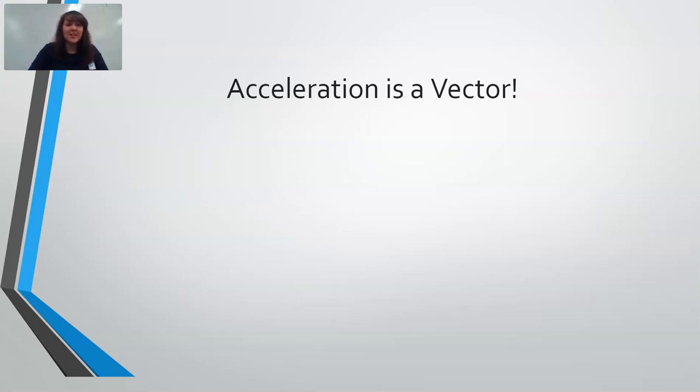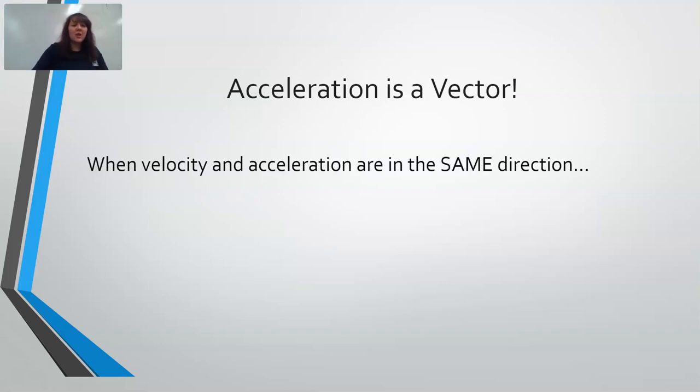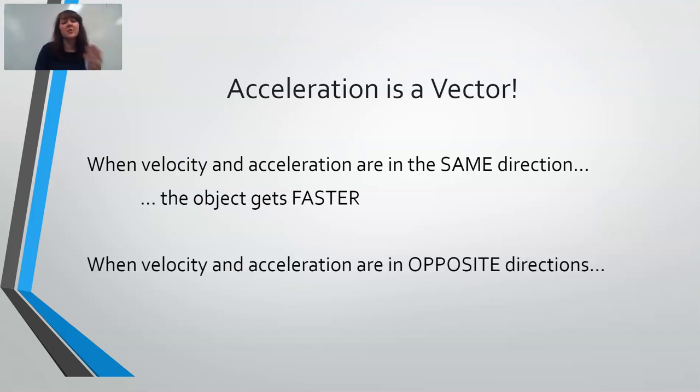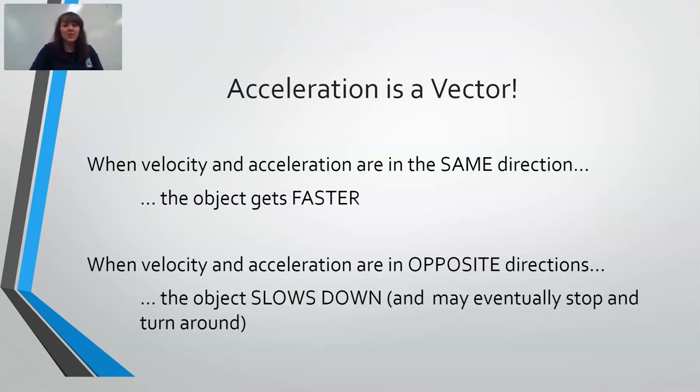This also brings us to this idea that acceleration is a vector. We saw a couple slides ago that we had an acceleration of negative 3 meters per second squared. Things can only be negative if they are vectors. So direction matters for acceleration. If we have an object that has a velocity and acceleration in the same direction, the object would get faster. If the velocity and the acceleration are in opposite directions, then the object slows down, and if that acceleration continues, the object might even come to a stop eventually and turn around and go the other direction.